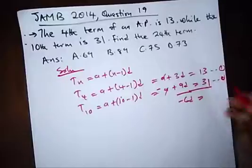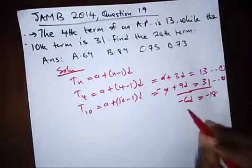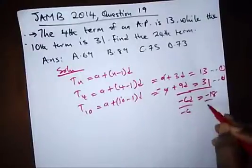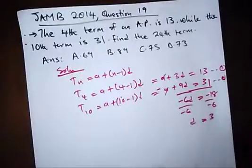And 13 minus 31 will give us minus 18. Dividing both sides by minus 6, we have D is equal to 3.